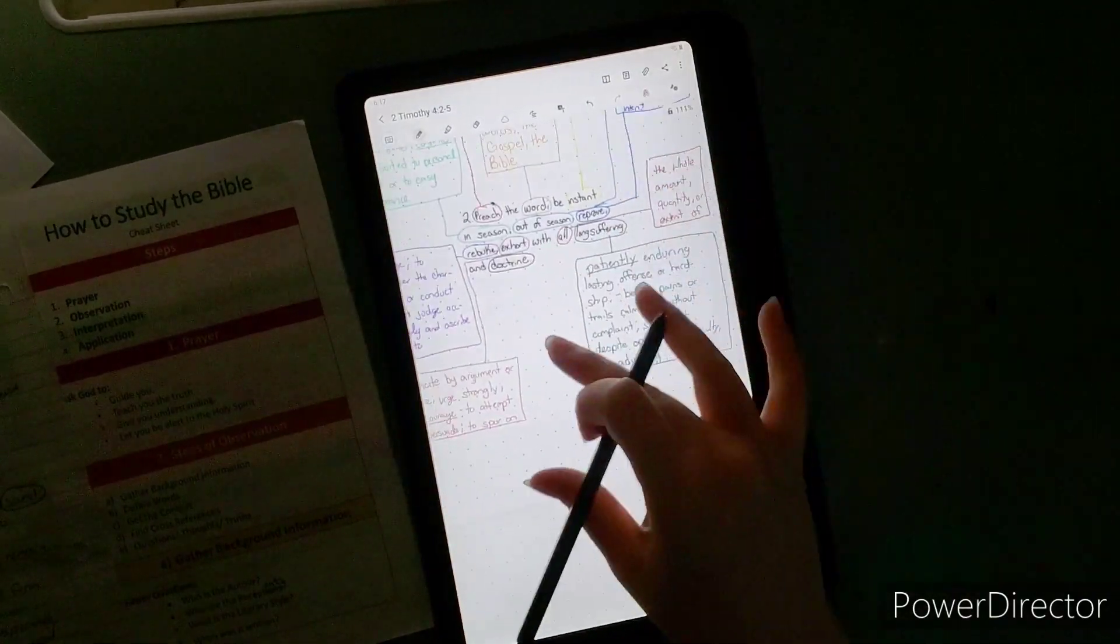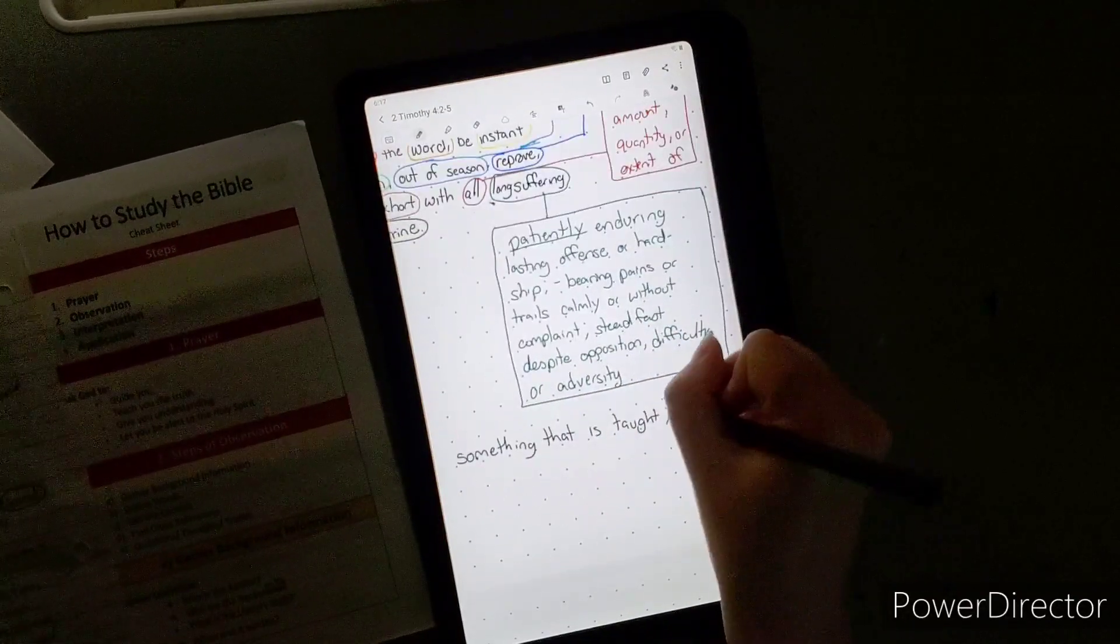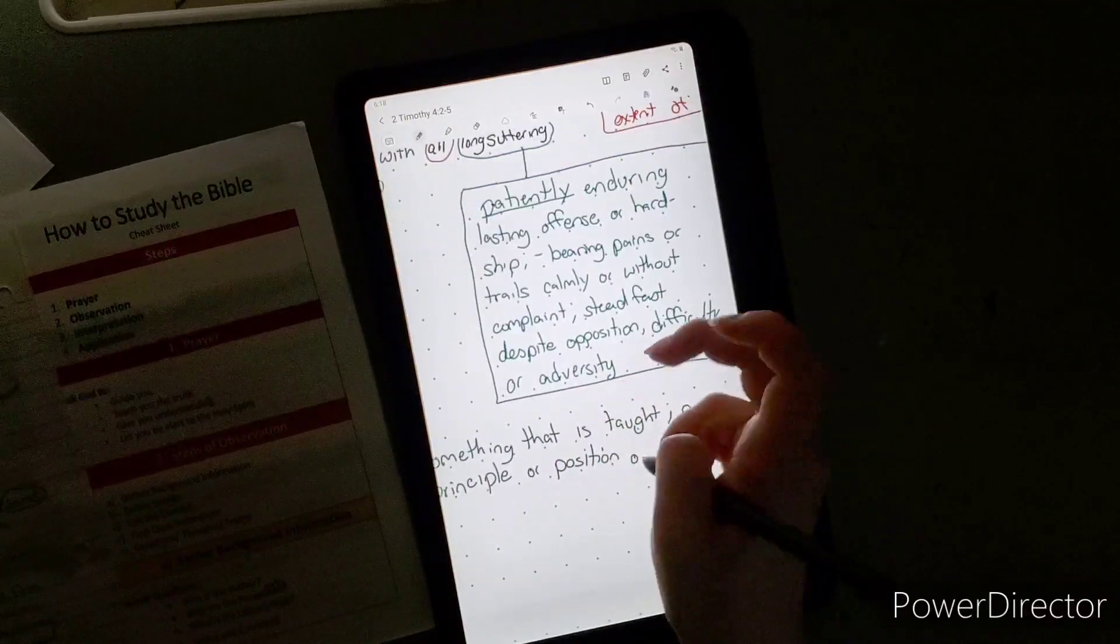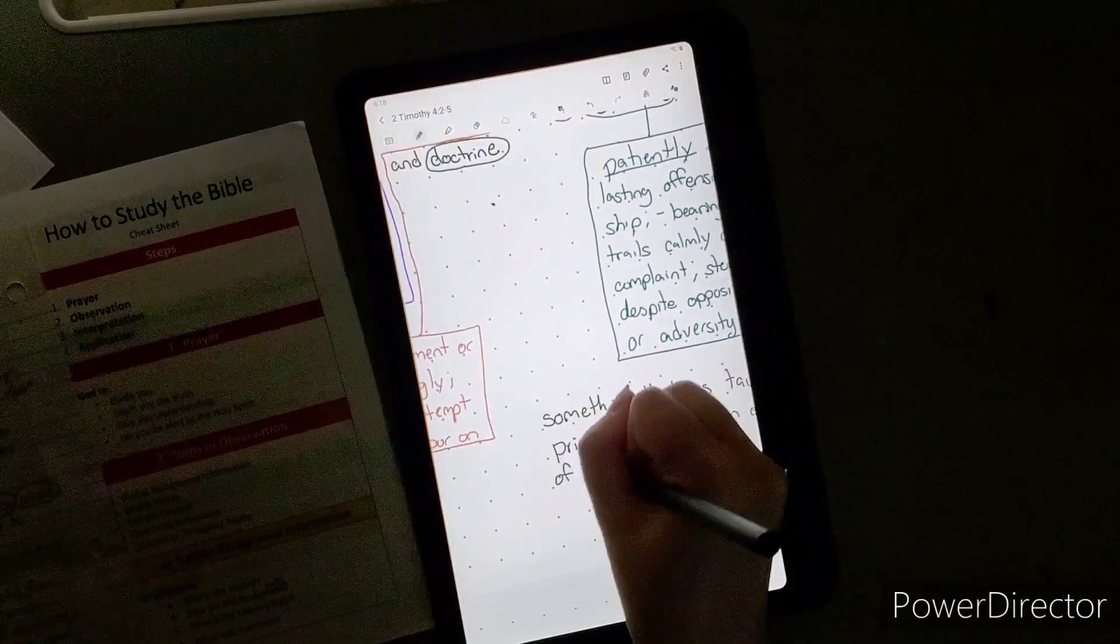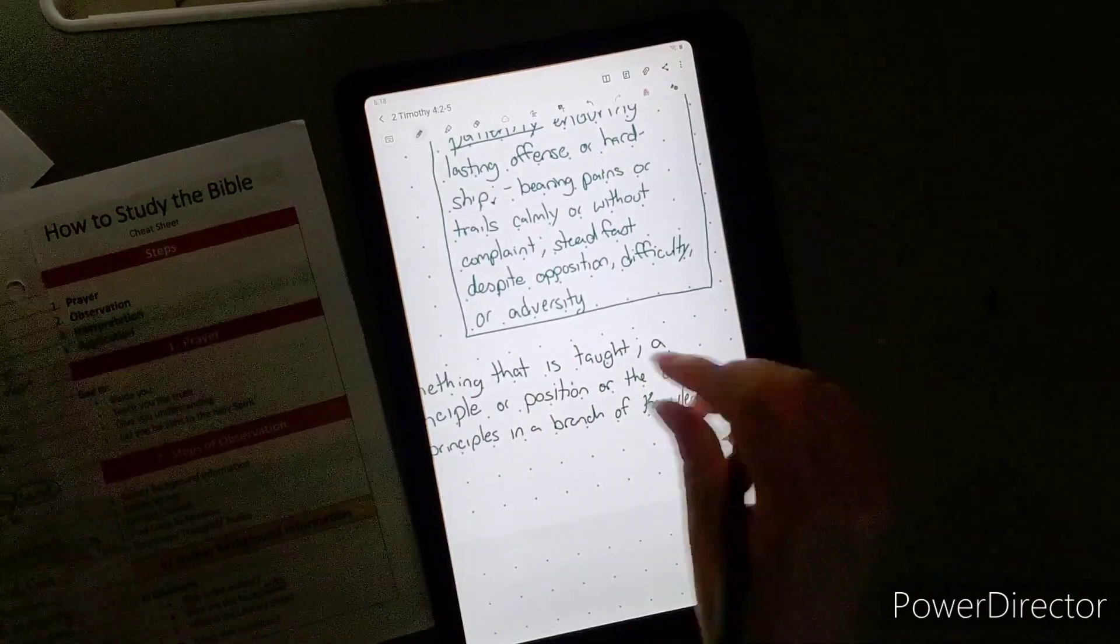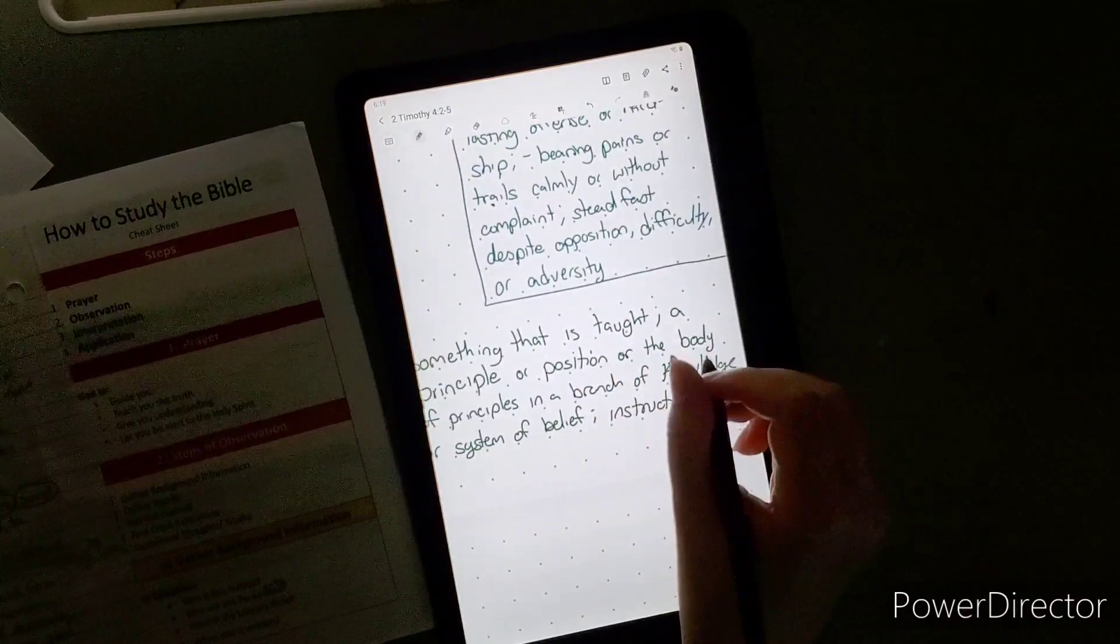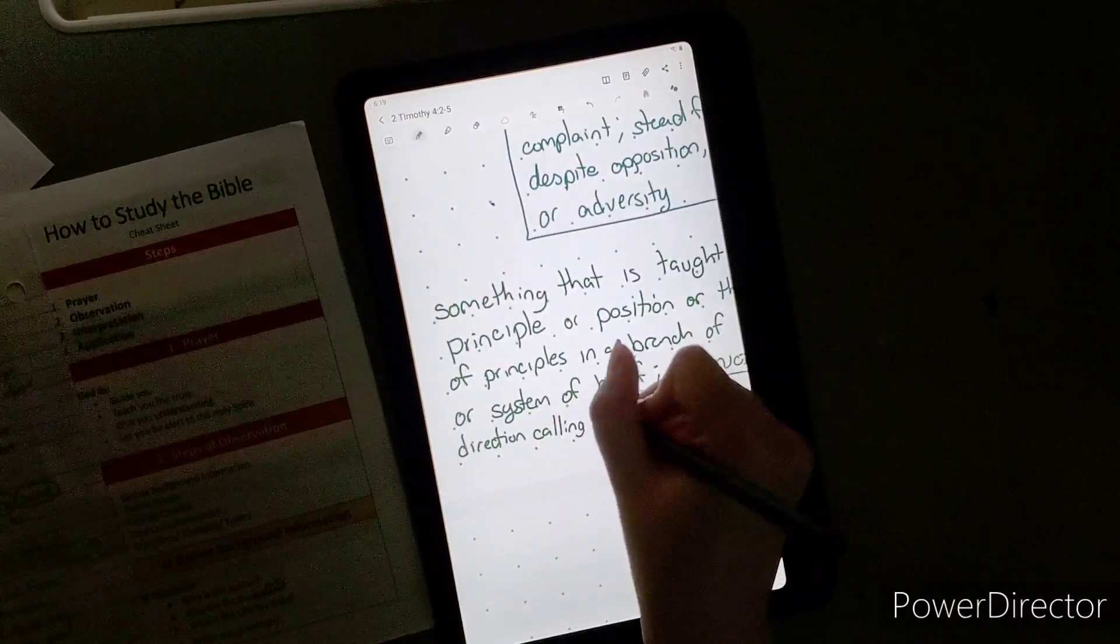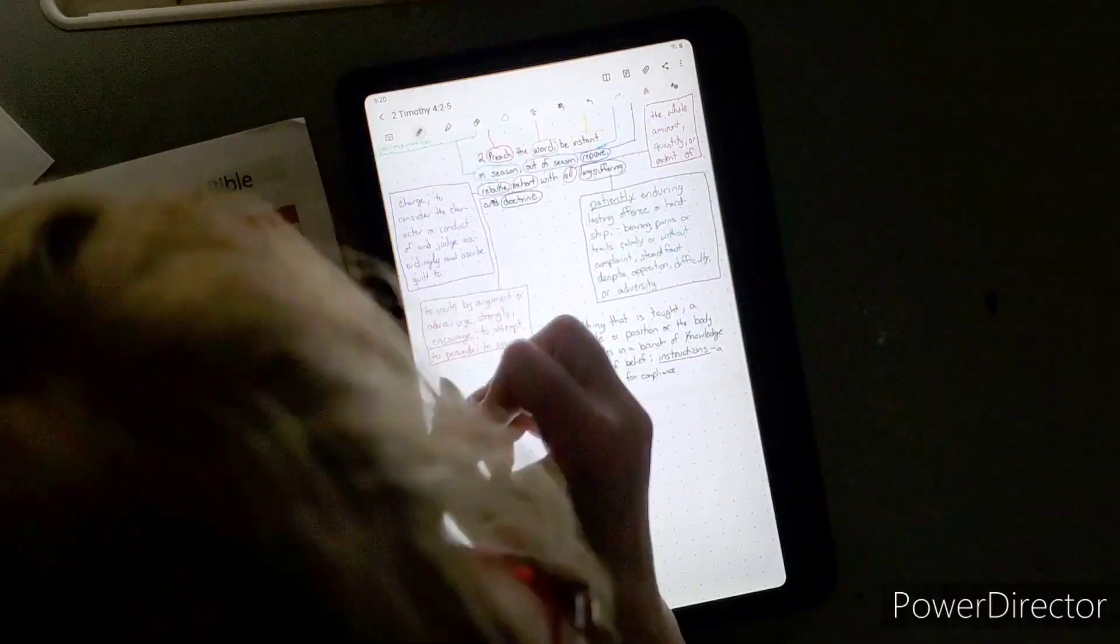You're going to be going through hardships yourself and in your own family, and you're going to hit difficulty and even people that oppose you. But also with all long suffering and doctrine. You should be preaching the entire doctrine of God. Doctrine is something that is taught, a principle or position, or the body of principles in a branch of knowledge or system of belief, basically like instructions or direction.